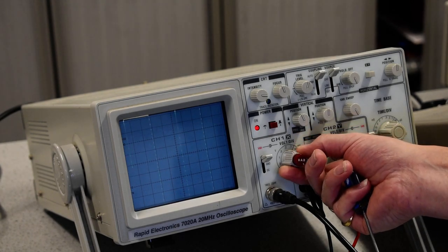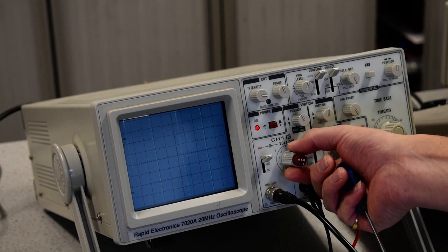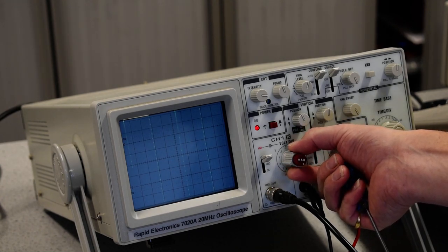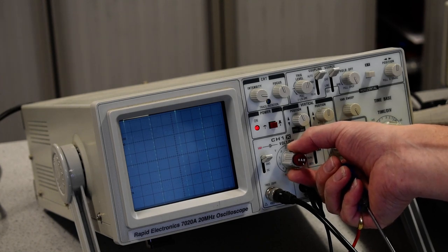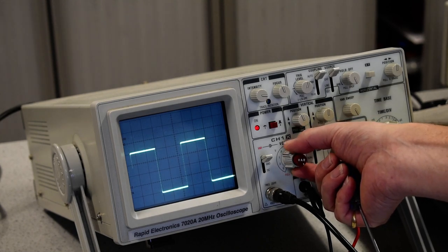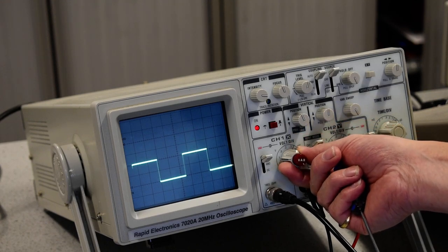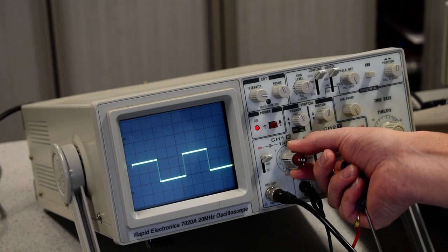If we go down a scale, the waveform is too big on the screen to measure. You cannot measure accurately because we're going off-screen. We don't want to go up a scale because the waveform is then too small.